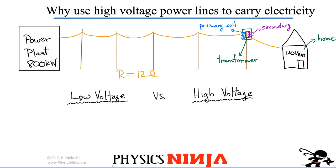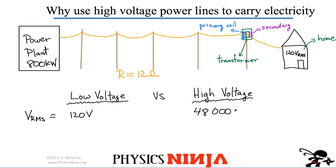In the low voltage case versus the high voltage case, let's calculate what our current is. For the low voltage case, let's consider V_RMS equal to 120 volts all the way across. For the high voltage case, let's consider 48 kilovolts, or 48,000 volts. We need to know what the RMS current is in each case.